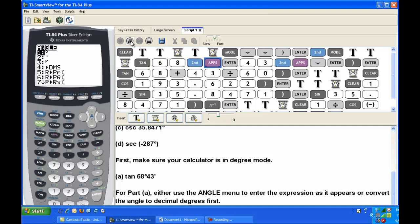Notice that the angle menu, you have to hit second and then apps, and you'll find the degree symbol and the minute symbol there. So just enter tangent of 68 degrees 43 minutes.